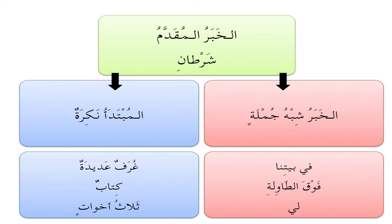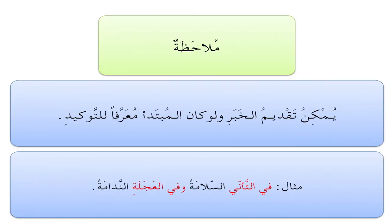لي ثلاث أخوات — 'I have three sisters.' لي literally means 'to me,' and it doesn't actually use the word 'have' the way it is used in English.